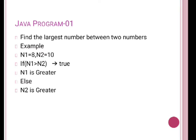The first program is about finding the largest number between two numbers. We have taken two numbers, n1 and n2. Let's suppose n1 is 8 and n2 is 10. We have a conditional statement — in if, we always have to put a boolean condition. So we put: if n1 is greater than n2, then n1 is greater, otherwise n2 is greater.